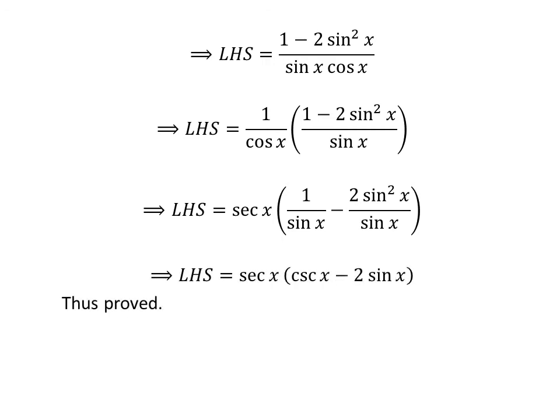We know 1 upon sine of x is equal to cosecant of x, and cancelling out the common factor sine of x in the numerator and denominator of the second fraction gives us the left hand side of the identity equal to secant of x times cosecant of x minus 2 times sine of x. Thus, we have verified the identity.